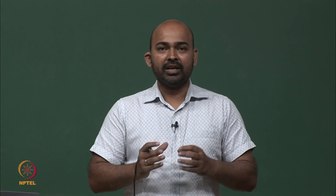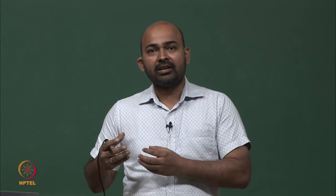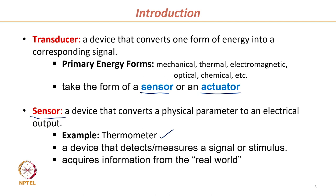When we say transducers, most of the time we are dealing with sensors — the input can be anything, an environmental parameter, but the output is an electrical signal. For example, a digital thermometer measures the temperature of the environment and gives a reading in the form of an electrical output shown on a digital display, like 100 or 102 degrees Fahrenheit. The sensor detects or measures a signal or stimuli from the outside environment and acquires information from the real world.